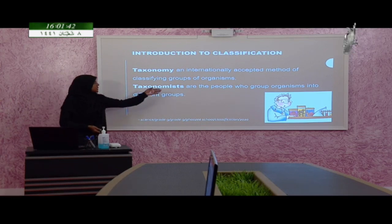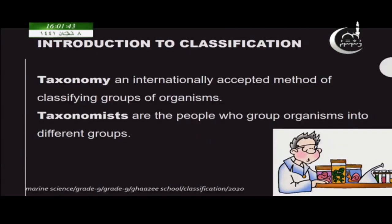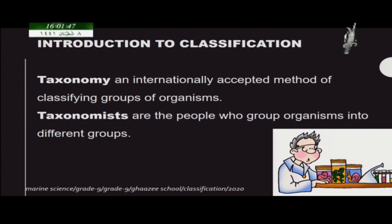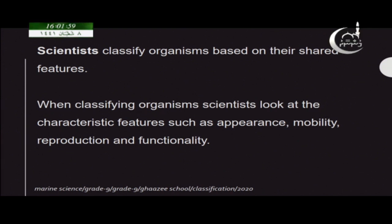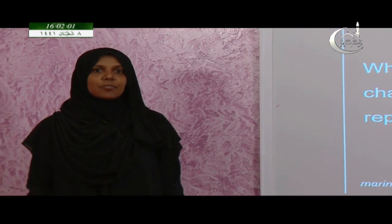Taxonomists are the people who group organisms into different groups. In taxonomy, scientists classify organisms based on their shared features — the features that they can see from the organisms.